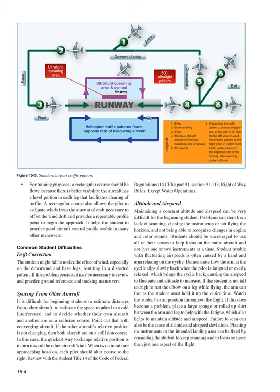Altitude and airspeed: maintaining a constant altitude and airspeed can be very difficult for the beginning student. Problems can stem from lack of scanning, chasing the instruments or not flying the horizon, and not being able to recognize changes in engine and rotor sounds. Students should be encouraged to use all of their senses to focus on the entire aircraft. Student trouble with fluctuating airspeeds is often caused by a hand and arm relaxing on the cyclic. Demonstrate how the arm at the cyclic slips slowly back when the pilot is fatigued or overly relaxed, bringing the cyclic back and causing the airspeed to fluctuate and altitude to increase. Watch the student's arm position throughout the flight.